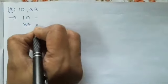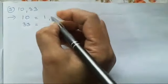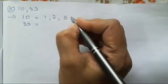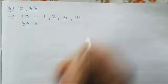The third one is 10 and 33. So now, let's take the factors of 10 and 33. So 1, 2, 5 and 10.